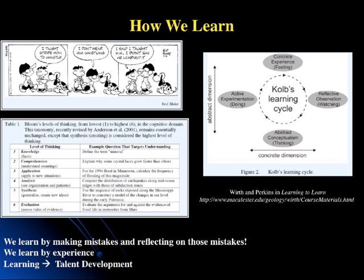There's a paper on Blackboard I asked you all to read — on how we learn. I like the cartoon strip: I taught Stripe how to whistle. I don't hear him whistling. I said I taught him — I didn't say he learned it. We quite frequently think that because I'm up here teaching, you must be learning. I can teach without any learning occurring. Students also frequently think: I read the material, therefore I must be learning. You can read things and not comprehend a word. Actions don't necessarily translate into the learning process we're interested in.